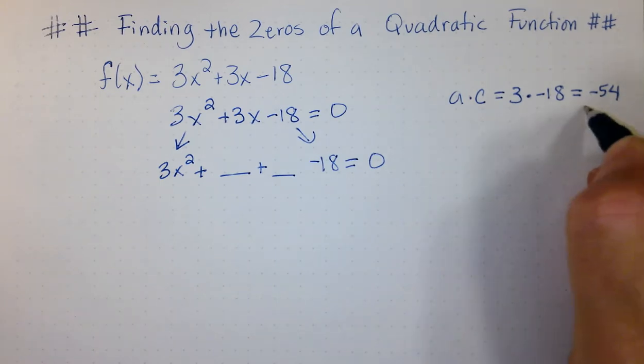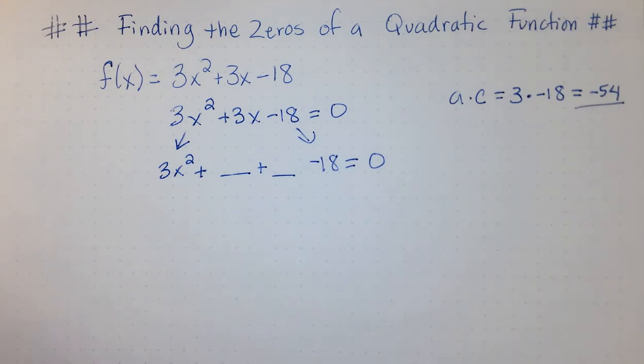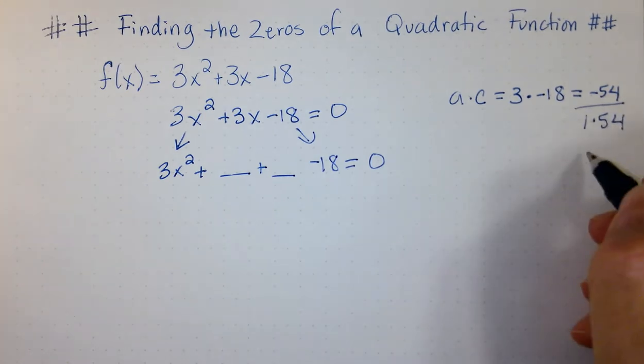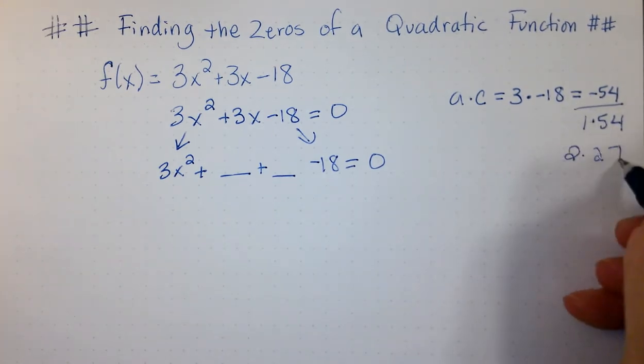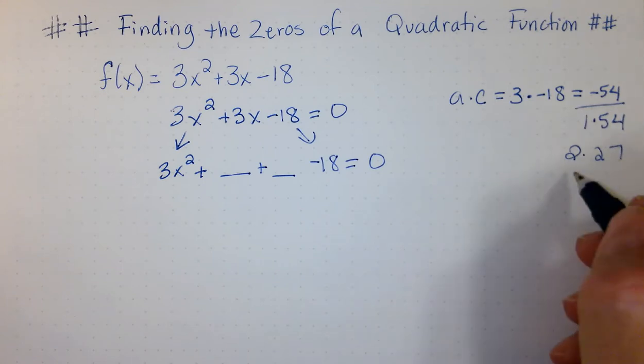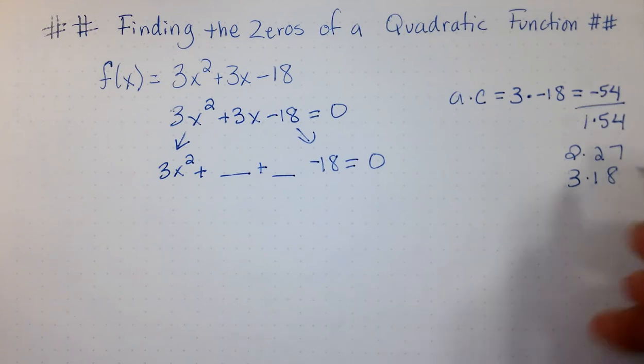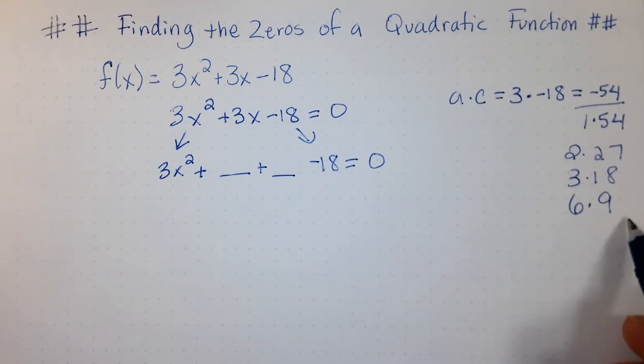Let's list the factors of just 54. We can take care of the signs later. We have 1 and 54, 2 and 27, 3 and 18, 4 doesn't work, 5 doesn't work, but then we have 6 and 9. And we know to stop with this because if I was to keep going, I would have 9 times 6 and that would be basically starting over.